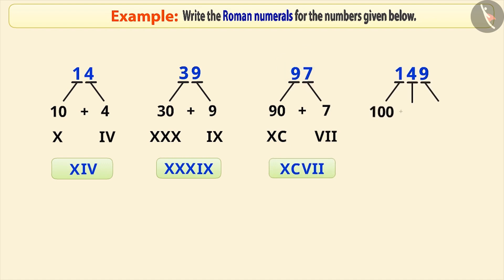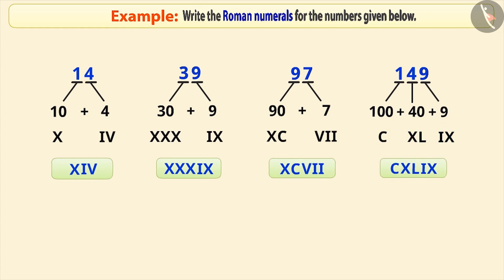149 is equal to 100 plus 40 plus 9. We write 100 like this in Roman, 40 like this and 9 like this. Therefore, writing them together will make the Roman numeral 149.